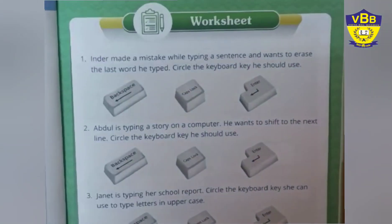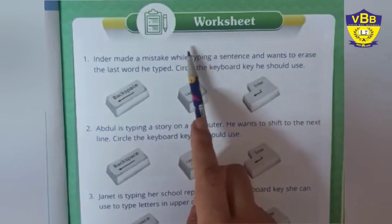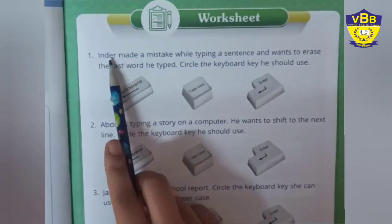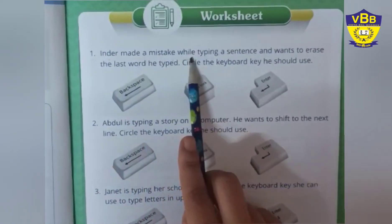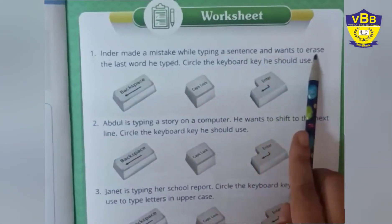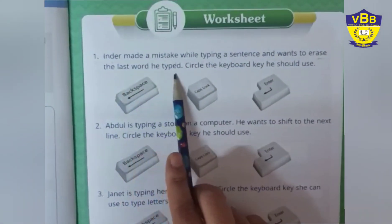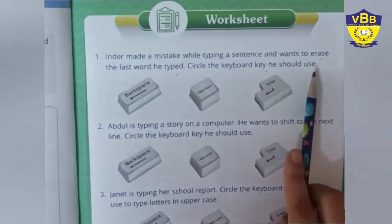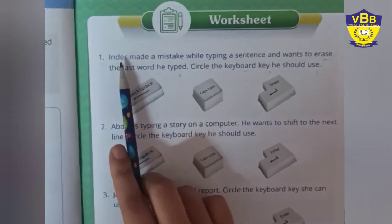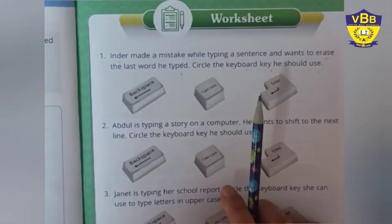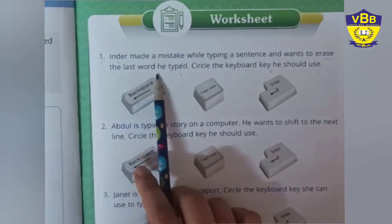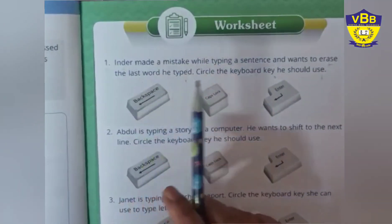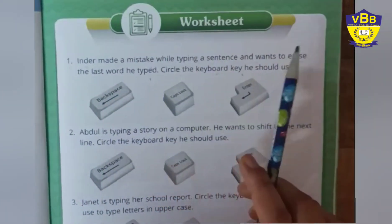Okay students, I hope you all are on page number 25. This is the worksheet we are going to do. So the first question is: Inder made a mistake while typing a sentence and wants to erase the last word he typed. Circle the keyboard key he should use. We are talking about Inder who had made some mistake while typing a sentence and wants to erase the last word he typed. In the last video, you all must have understood which key is used to erase the last word which has been typed.